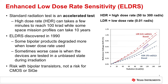The historic standard radiation test was an accelerated test done at high dose rate over a relatively short time period. For example, at 300 RADs per second, it takes less than six minutes to reach 100k RAD. But in space, a system can take up to 10 years to reach 100k RAD.